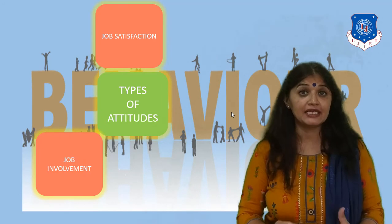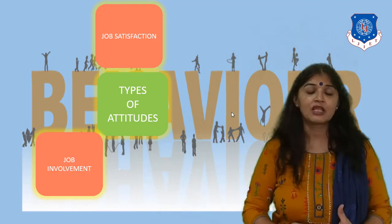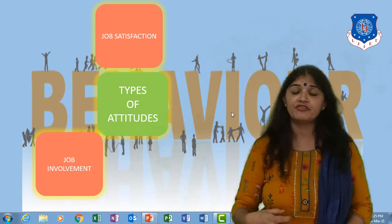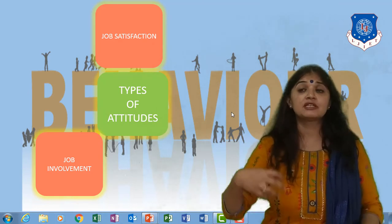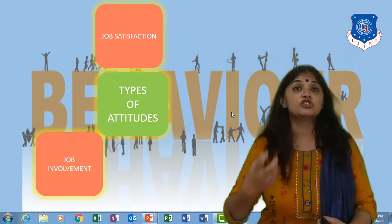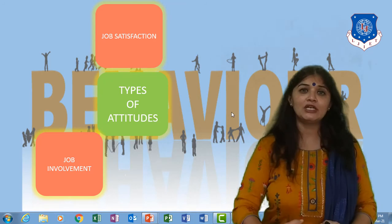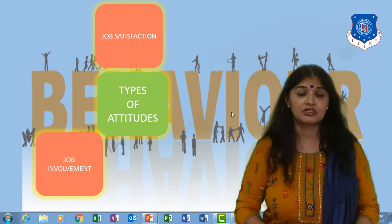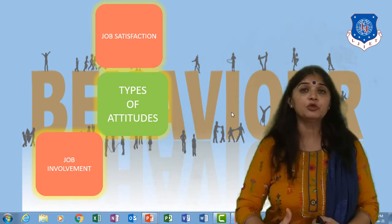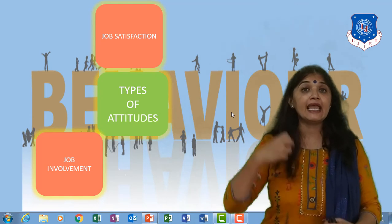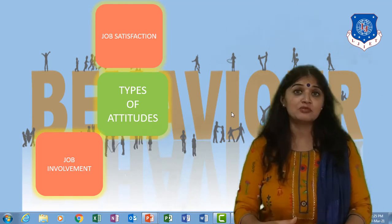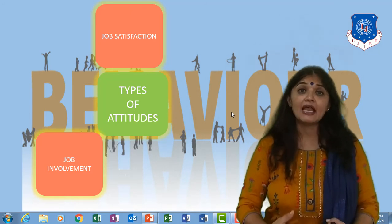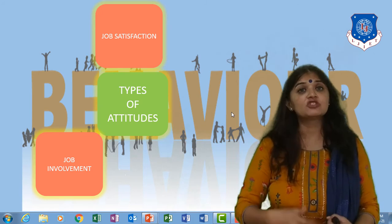The second type of attitude in an organization is job involvement — the extent to which a person can identify themselves with their work, whether a person enjoys their work. Job involvement only comes when a person is happy at the workplace or has a high level of job satisfaction. It means a person contributes towards the job and is highly engaged. Job involvement comes when a person does work that is interesting, helps them grow, and is to their liking.